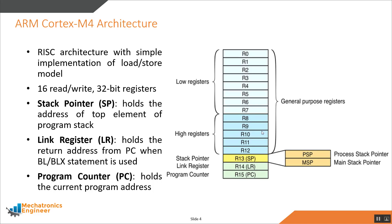Cortex-M4 architecture provides 16 read-write 32-bit registers numbered from R0 to R15. The registers R0 to R12 are general purpose registers, and the last three registers have special hardware significance. The general purpose registers have no special architecturally defined uses. Registers R0 to R7 are called low registers and are accessible by all instructions, while registers R8 to R12 are called high registers and are only accessible by 32-bit instructions that specify a general purpose register.